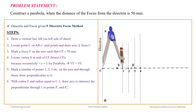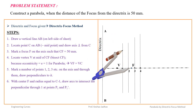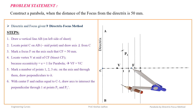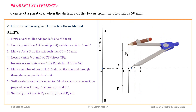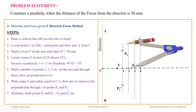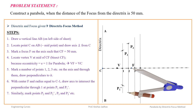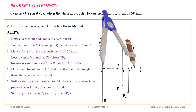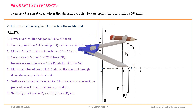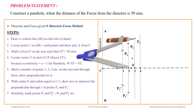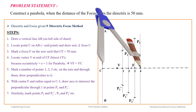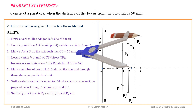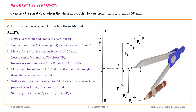Take distance C1 in the compass, take focus F as center, and draw arcs on the line passing through point 1 on both sides of the axis. Mark points P1 and P1'. Then take distance C2, take F as center, and mark points P2 and P2'. Similarly, take distance C3 and mark points P3 and P3'. Take distance C4, take focus as center, and draw arcs on both sides of the line through point 4 to mark P4 and P4'.